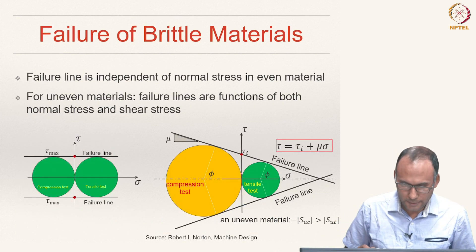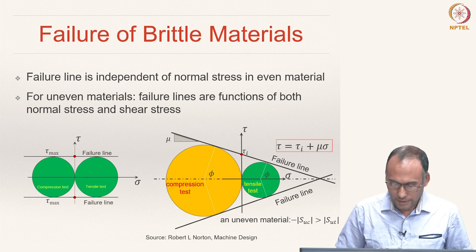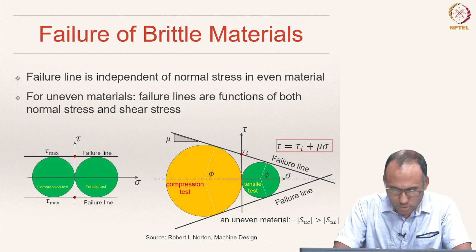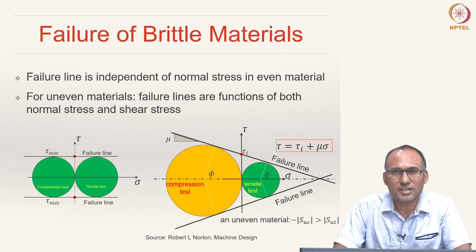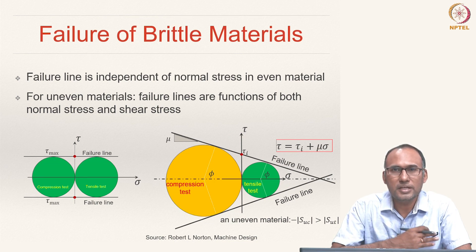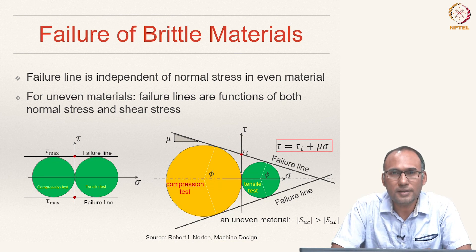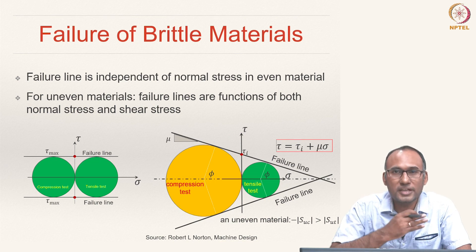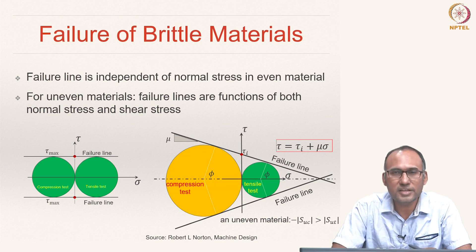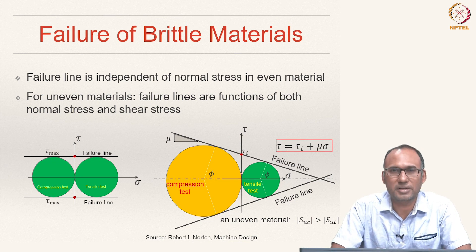Let us look at how the failure surface looks. We discussed two kinds of materials: even material and odd material. An even material is one which has both tensile and compressive strengths equal in magnitude. If the tensile strength and compressive strength of the material are different, then such a material is called an uneven material. Brittle materials are in general uneven materials.